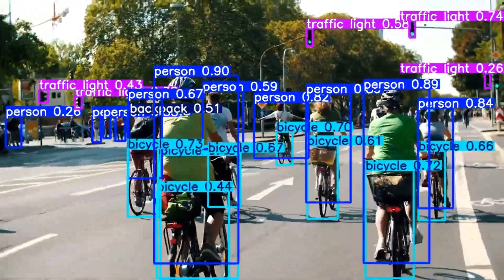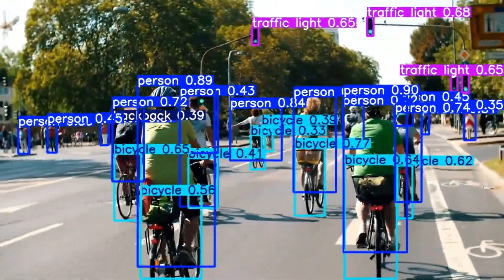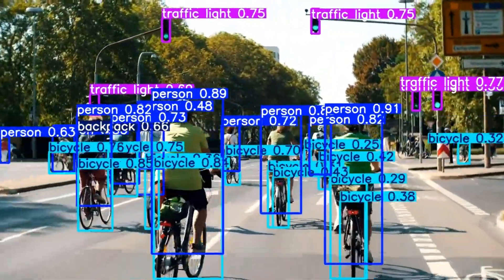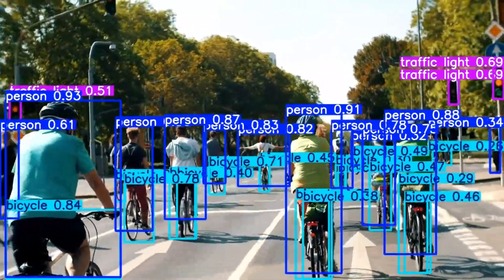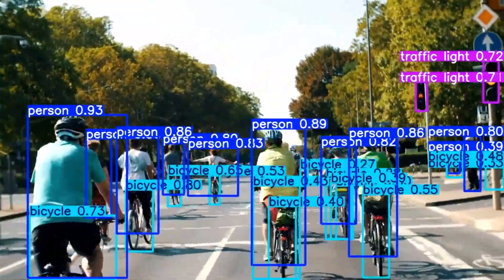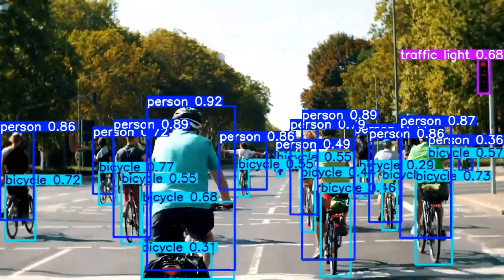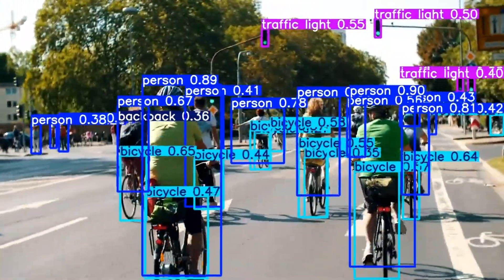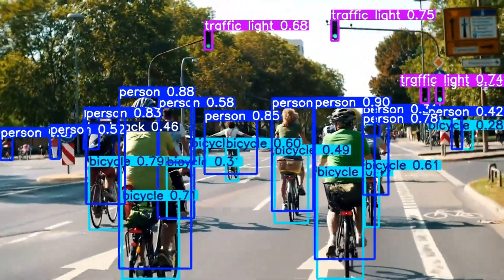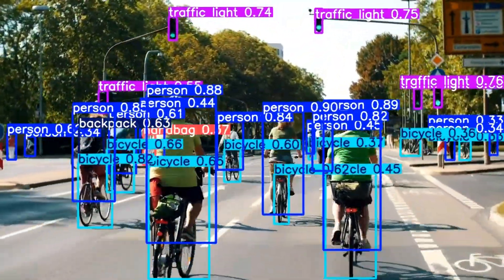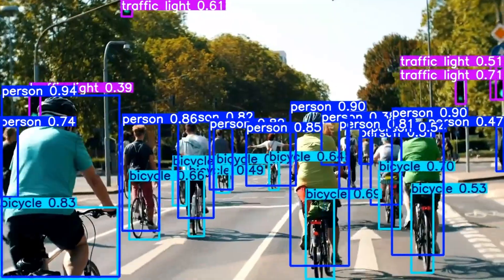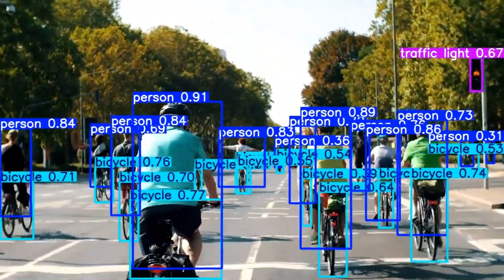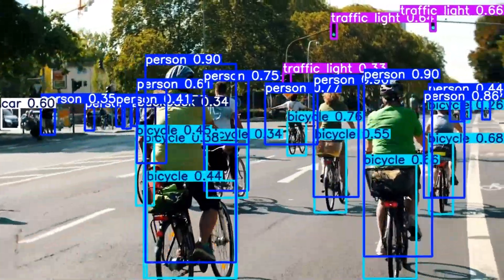Welcome to this course on YOLO V12, the latest state-of-the-art computer vision model. YOLO V12 introduces an attention-centric design that improves detection accuracy without compromising speed. We will start by looking at the key innovations in YOLO V12 and its performance metrics.